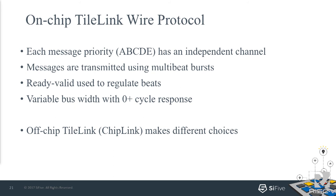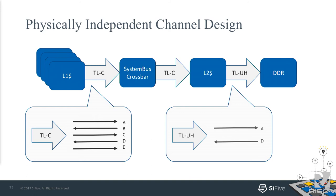If you have physically independent channels, this is what it's going to look like. You've got four L1 caches speaking TLC, the coherent protocol, to a crossbar — they've got five channels: A, C, and E go from master to slave, and B and D go from slave to master. Then you also have the coherent protocol to the L2. The crossbar is not participating in block ownership but is forwarding to the L2, which is. The L2 is talking to DRAM as the last-level cache here, so it only needs the TL-UH protocol — just the A and D priority channels.